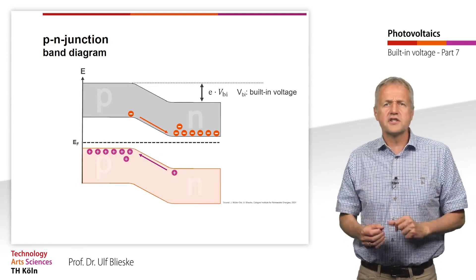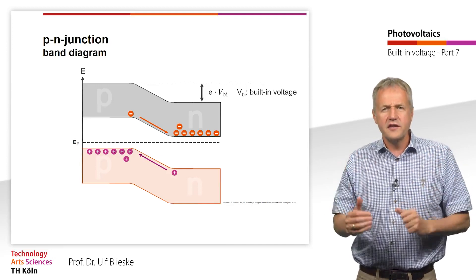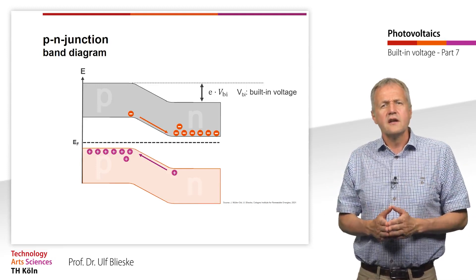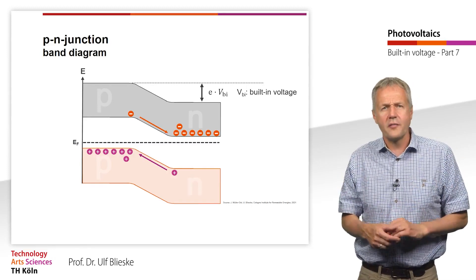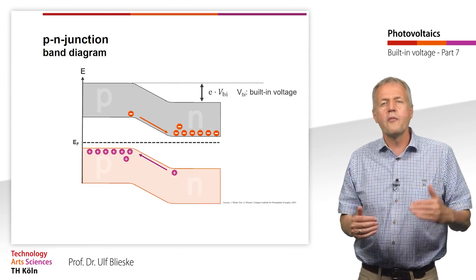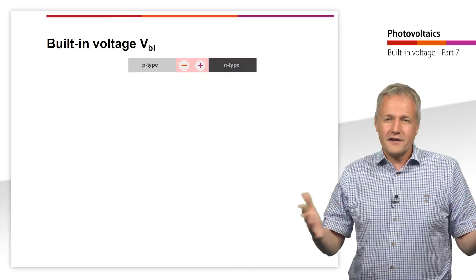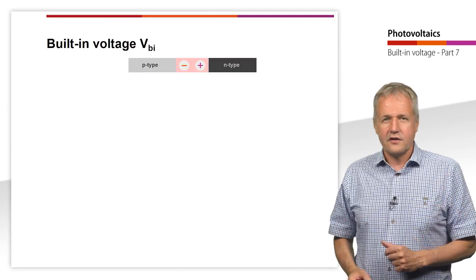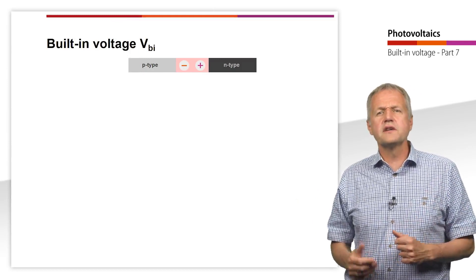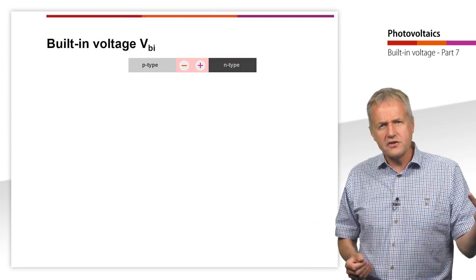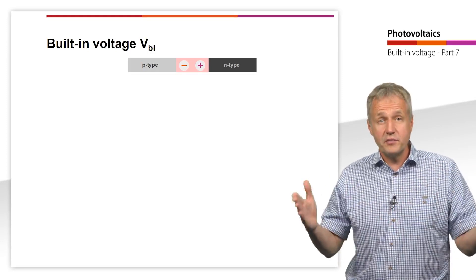The degree of band bending is of special interest to us because it is directly related to the so-called built-in voltage. The built-in voltage is the voltage that is generated by the electric field of the depletion region. It is important for solar cells because it gives us information about the maximum voltage a solar cell can deliver. In general, the built-in voltage results from the potential difference between the n and the p region far from the depletion region.